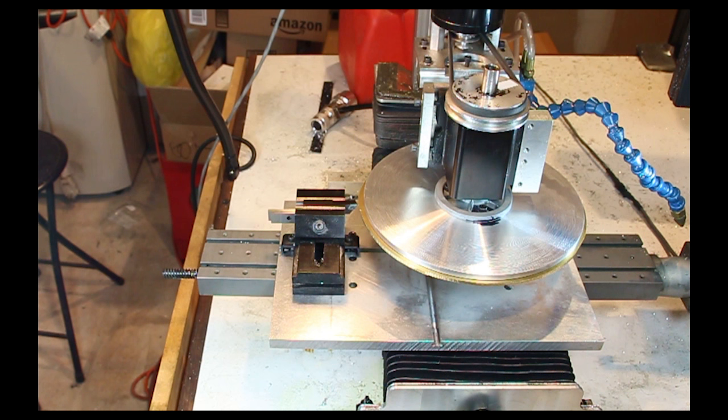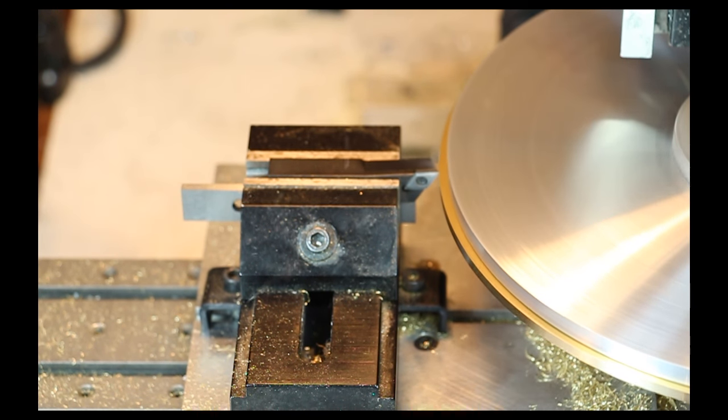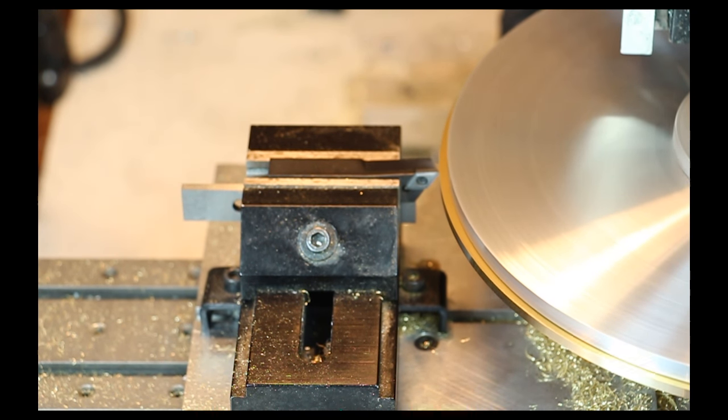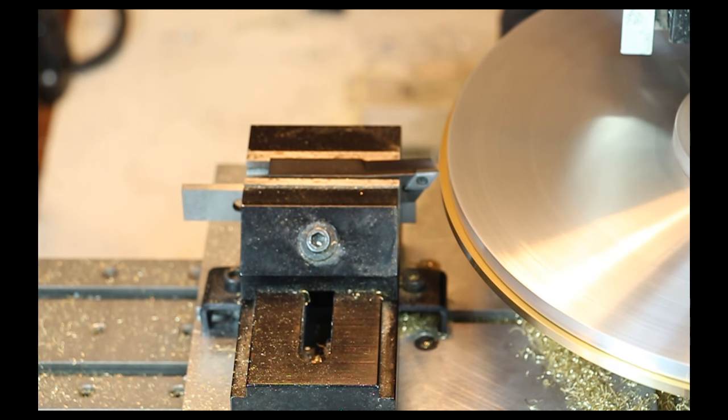So by mounting the cutting tool on the x-axis, and doing a little bit of clever thinking here, you can actually turn quite a large blank, just using your mill as a lathe.